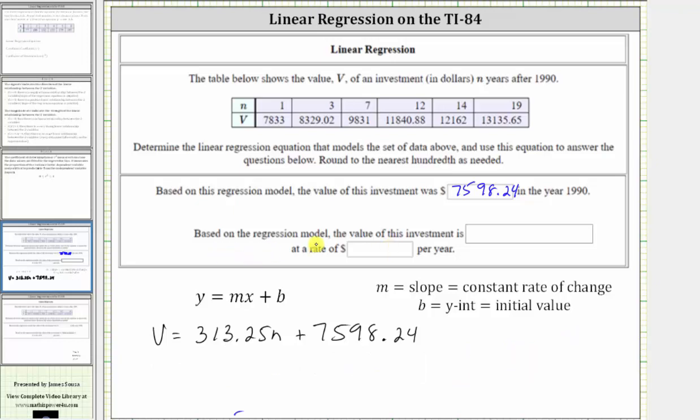Next, based on the regression model, the value of this investment is increasing or decreasing at a rate of how many dollars per year? We can answer this question by identifying the slope of our regression equation. Remember, slope is m, and therefore, for our equation, the slope m is the coefficient of n.